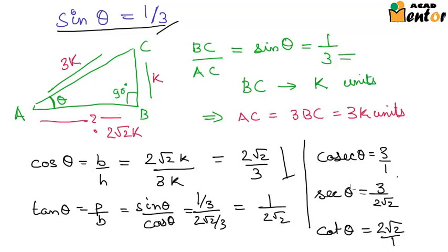Now, wasn't this pretty simple? So if you are given just one ratio, you can find out all the other 5 ratios just by applying the Pythagoras theorem. Now you see why the Pythagoras theorem was so important.